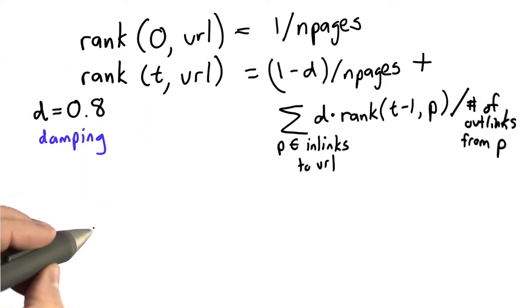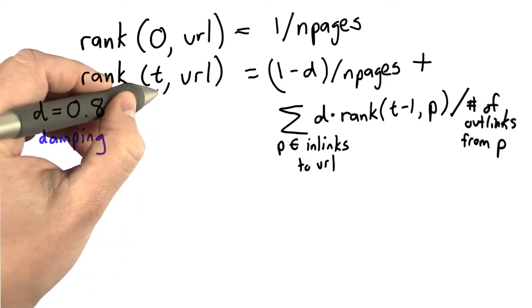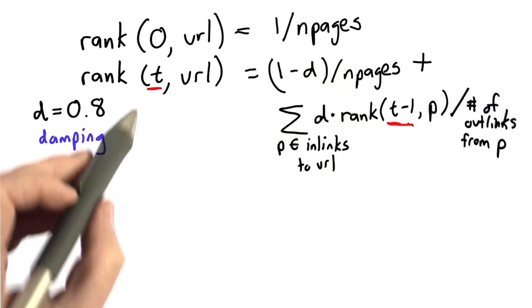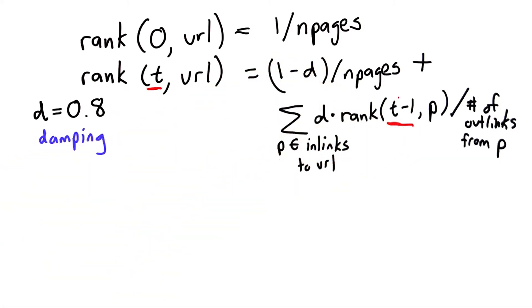And the first thing we're going to do to simplify it is observe that we have this t parameter, but we only ever use the very previous one. So we don't really need to keep track of the rank value for all the different t values. We just need to keep track of the previous one.